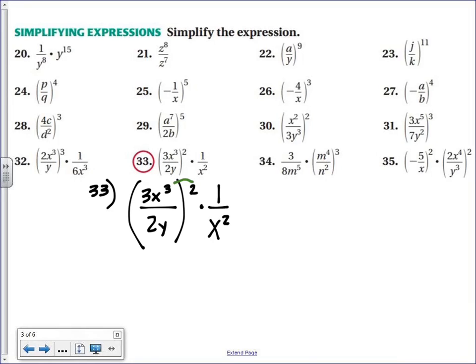so that means I multiply, but don't forget the invisible ones here on the 3, on this 2, and on the y. So I distribute the outer exponent of 2 to every single exponent on the inside. So then I would get 3 squared x to the 6, because you multiply, over 2 squared y squared, and then what we still have, 1 times x squared.